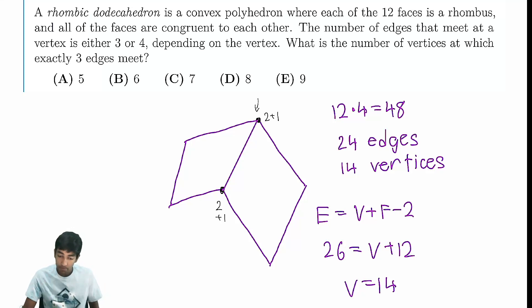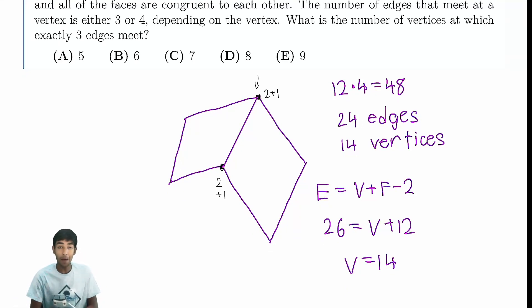So in total we have 24 edges. That means the count, the total count amongst all the vertices, because each edge contributes 1 to 2 vertices, is 48. So total count, and again by count I mean number of edges that extrude from one vertex, and total count is just the sum of that over all the vertices. Total count is just 2 times the number of edges, 48.